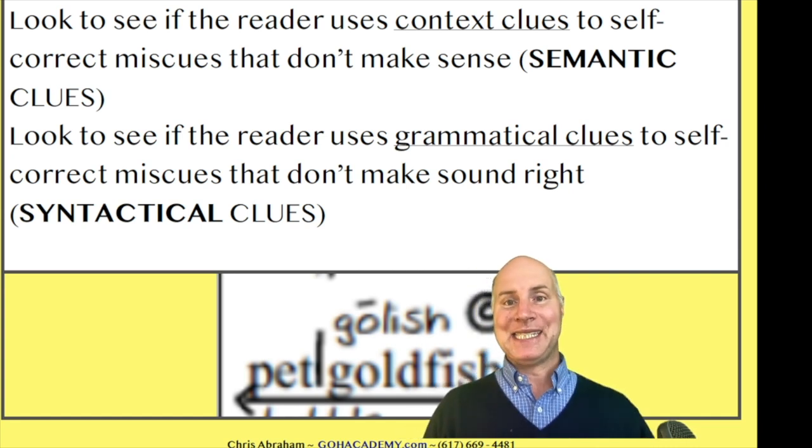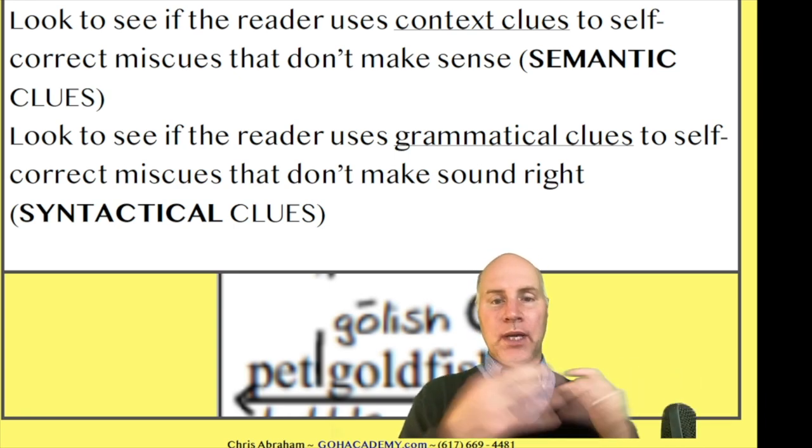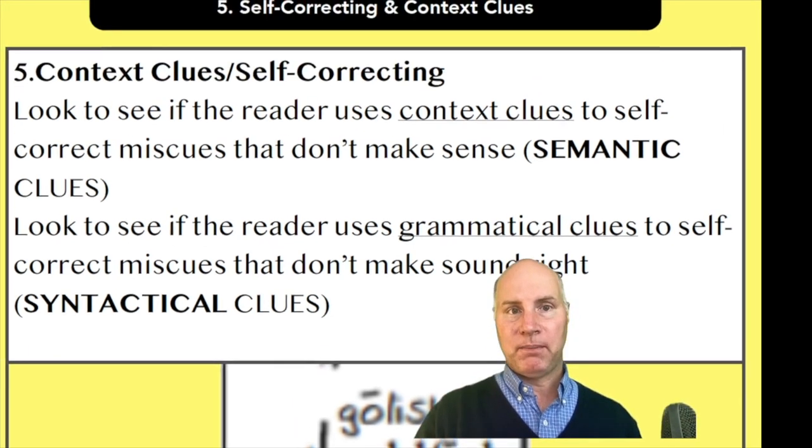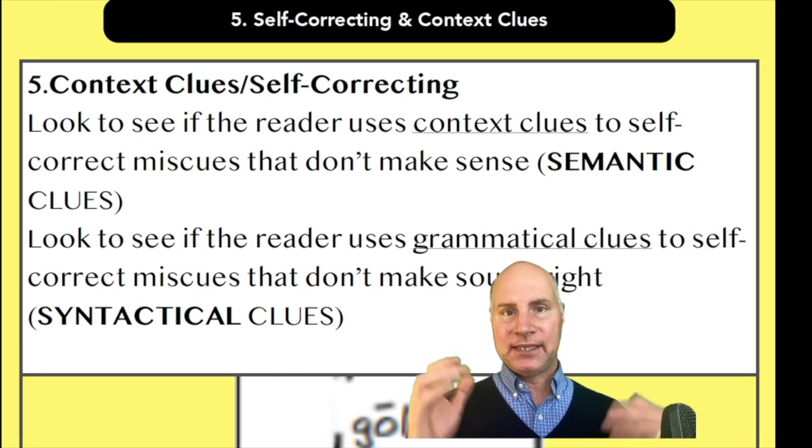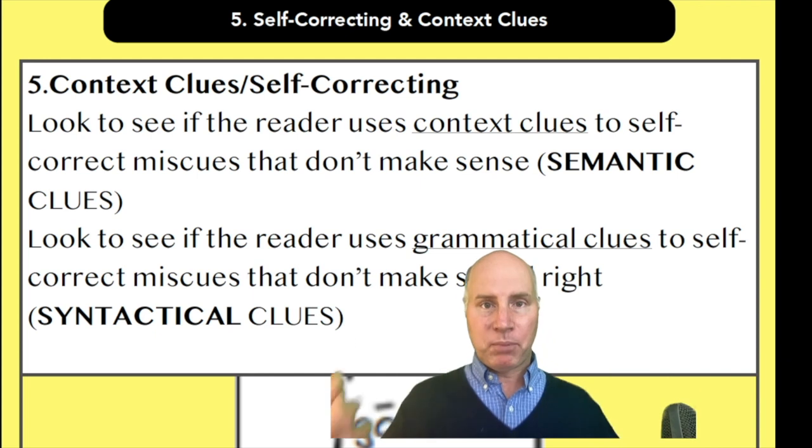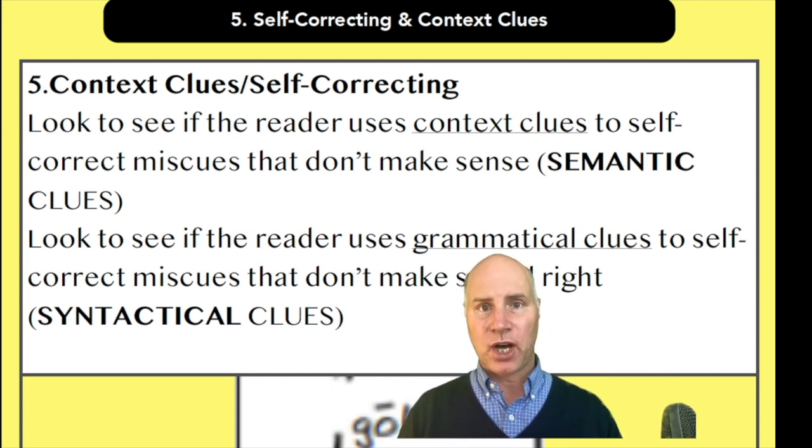There are other things like syntactical context clues. Those have to do with grammar clues. Anyway, we will look closer at these, but know that if you see self-correcting, this is definitely a byproduct of using context clues, both semantic and syntactical context clues.